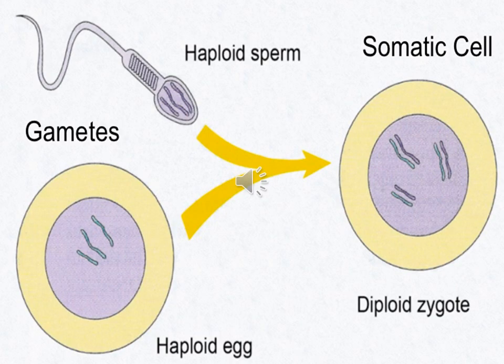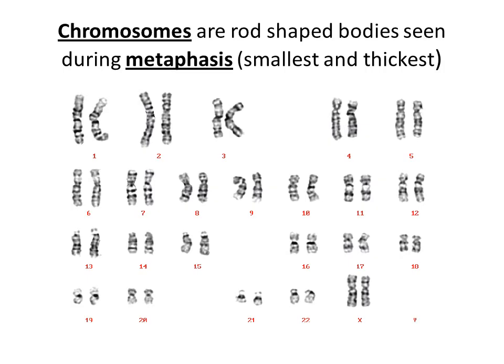The union of haploid sperm and egg will produce a diploid zygote. A karyotype is a picture of chromosomes. It is a way that we can count them, determine the gender, or evaluate an extra or missing chromosome. For karyotyping, the cells are obtained from blood, skin, or bone marrow.